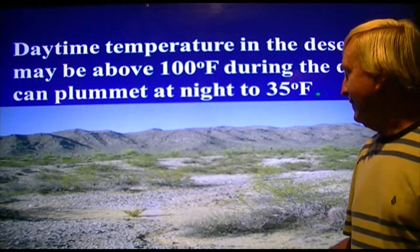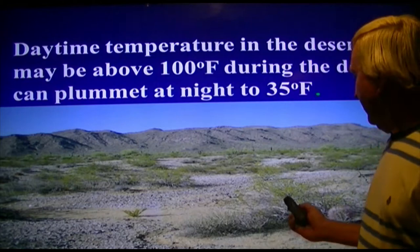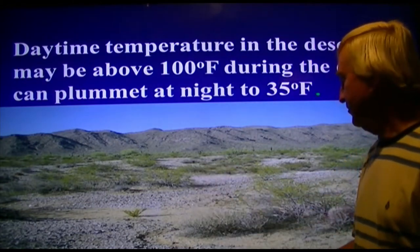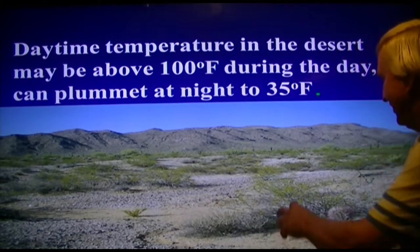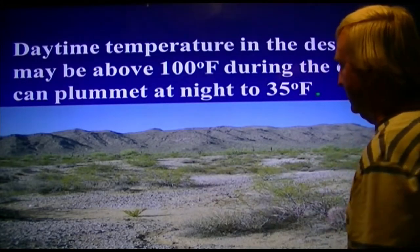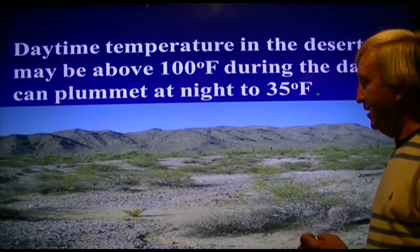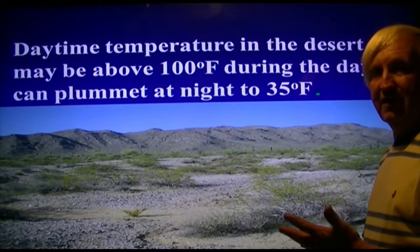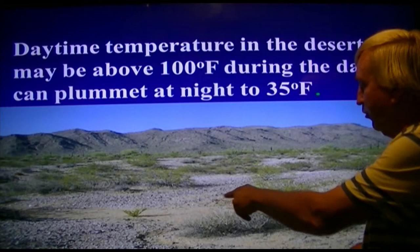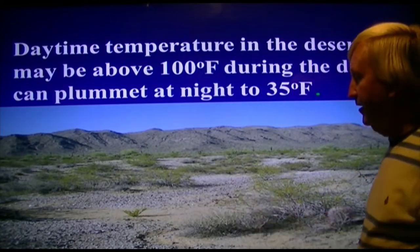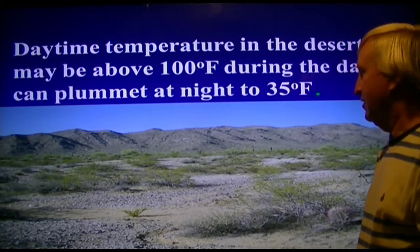Despite millions of years, desert soils are extremely poorly developed. This is a creosote desert, common in the Mojave Desert, and there's an equal spacing of these creosote bushes. That spacing is basically due to the unavailability of water — they actually secrete a poison that keeps other cactus and plants away because of the scarcity of water.